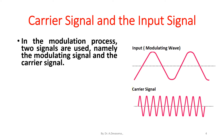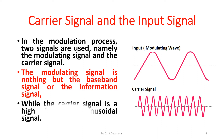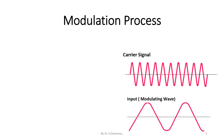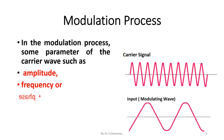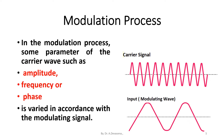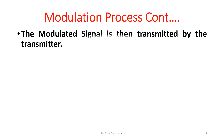In the modulation process, two signals are used: the modulating signal and the carrier signal. The modulating signal is the baseband or information signal, while the carrier signal is a high frequency sinusoidal signal. Some parameters of the carrier wave — such as amplitude, frequency, or phase — are varied in accordance with the modulating signal, which is then transmitted by the transmitter.